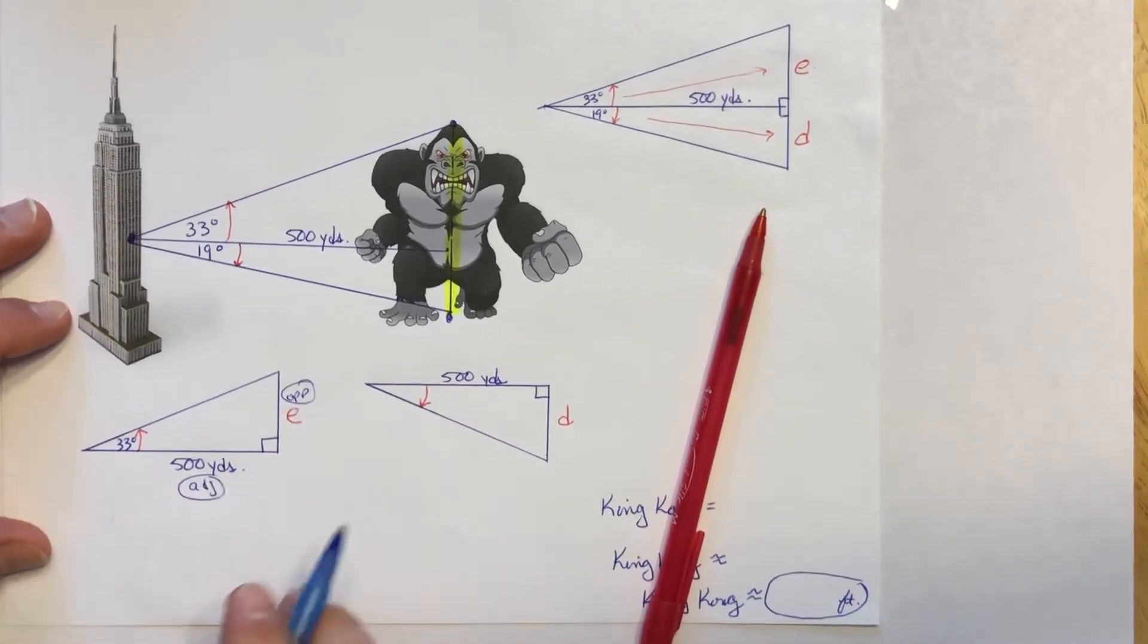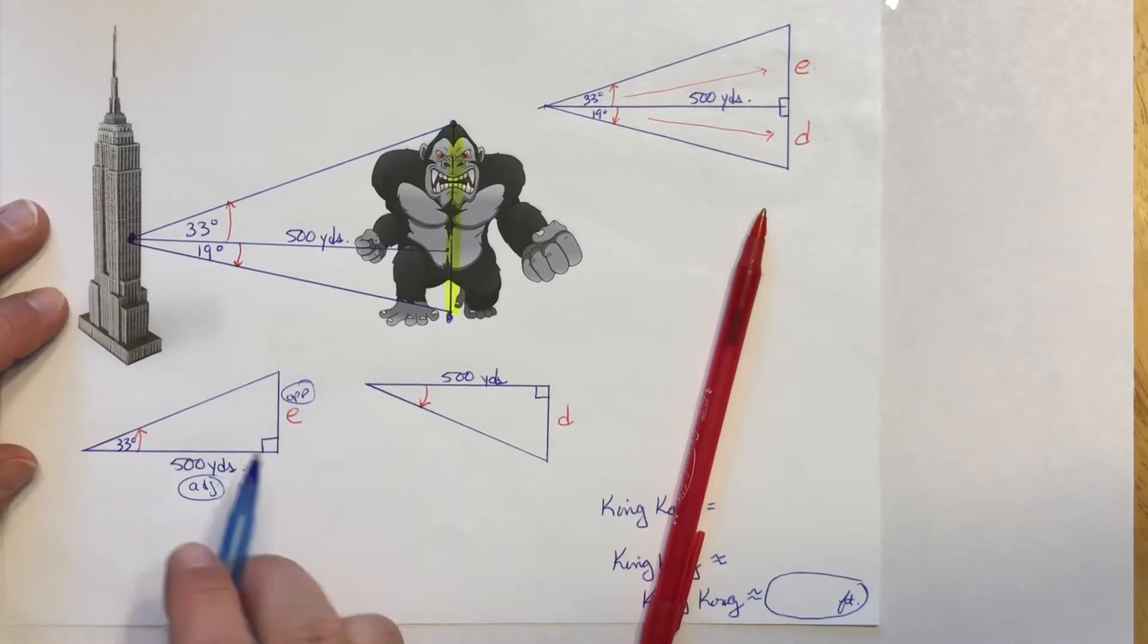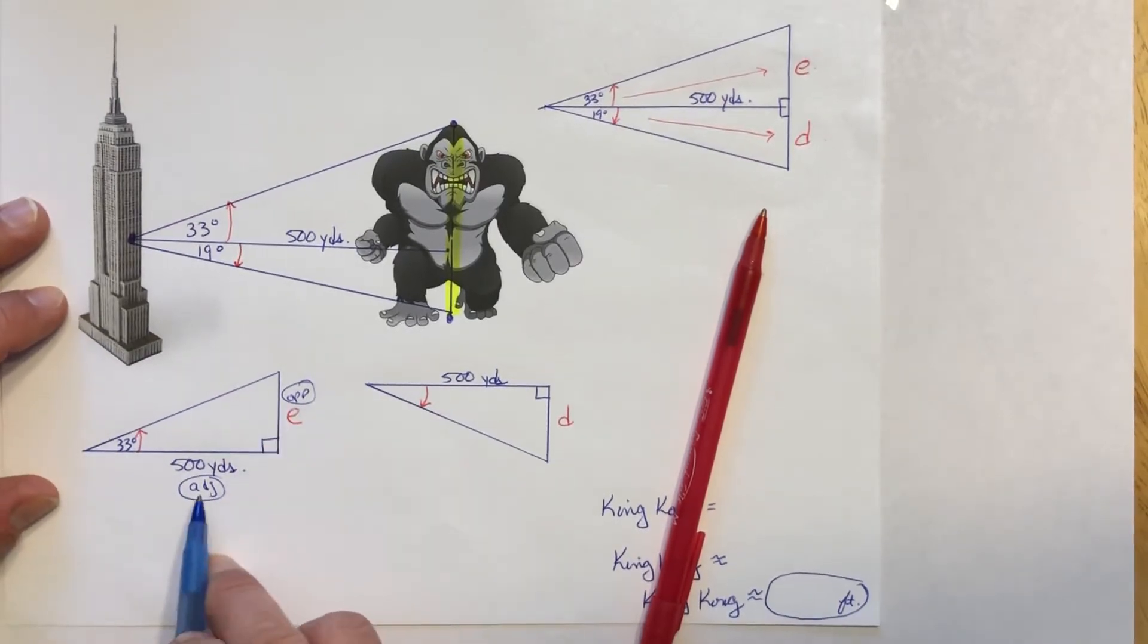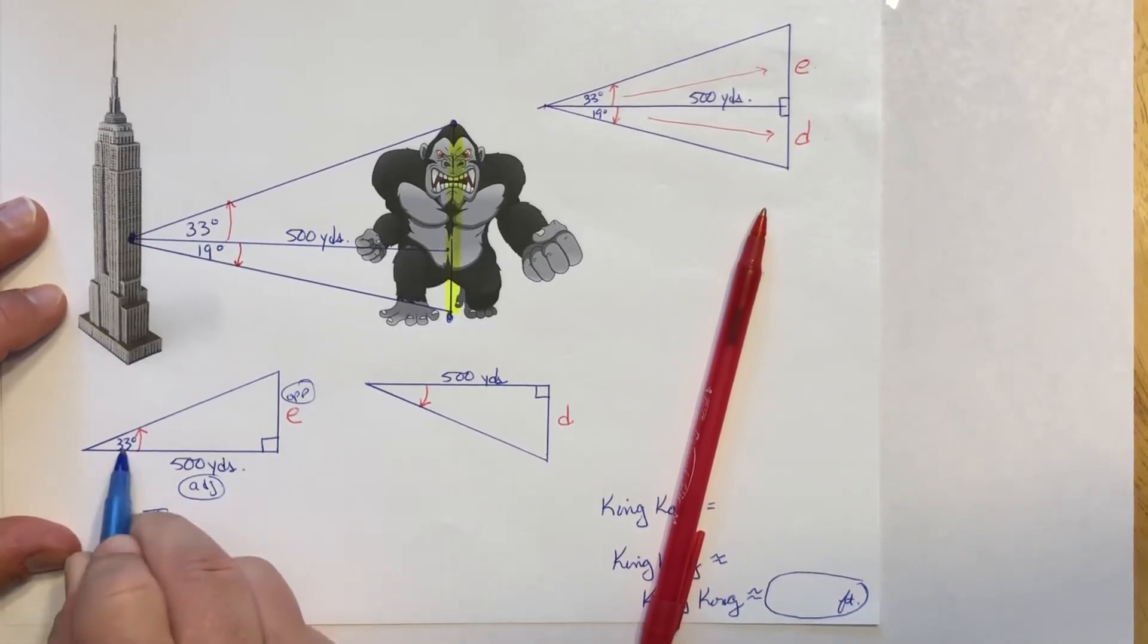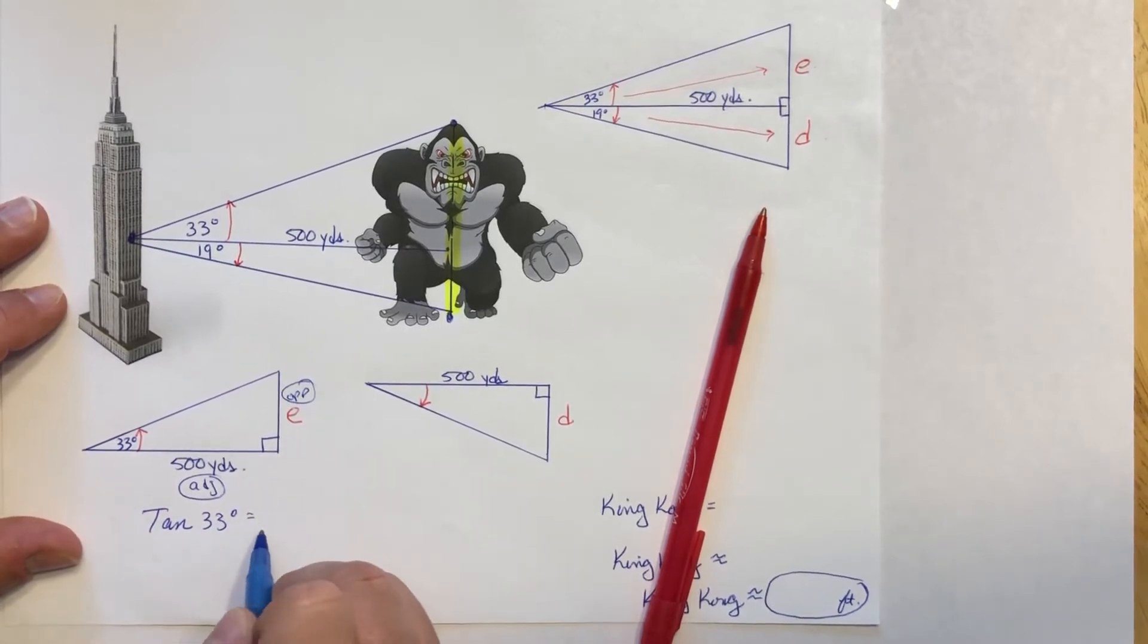So using SOHCAHTOA, which one uses opposite and adjacent? O and A? That's tangent. So I'm gonna write my tangent equation down here. Tangent of the angle. We know it. It's 33 degrees. Equals TOA. Tangent equals opposite over adjacent. So the opposite is E. The adjacent is 500.